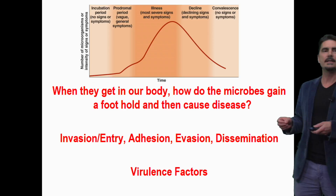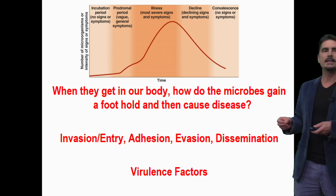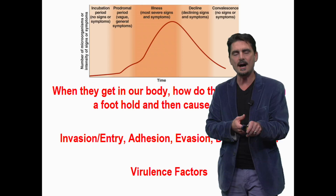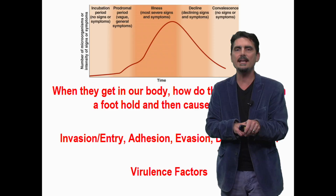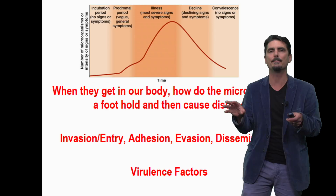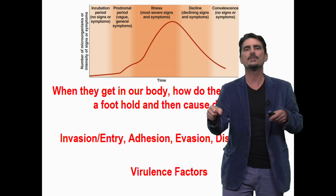Some key terms to consider are invasion, adhesion, evasion, and dissemination. For entry — in the case of a cut, the bacteria didn't cause the cut — but once they're there, how can they gain entry into your bloodstream or extracellular fluids? When they're there, microbes will often adhere to something — either stick to something to hide, or bind to something.